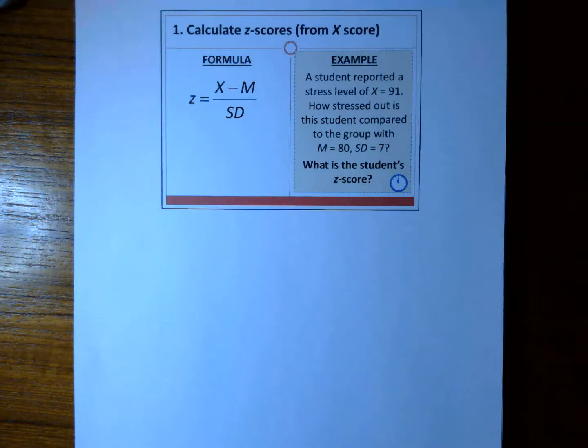A Z-score is also called a standard score because it provides a standard scale of measurement for any variable. Calculating a Z-score for a specific X-score helps with understanding or interpreting that X-score compared to the entire dataset. This is the first step into inferential statistics.